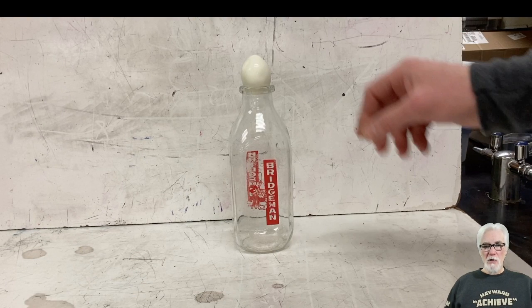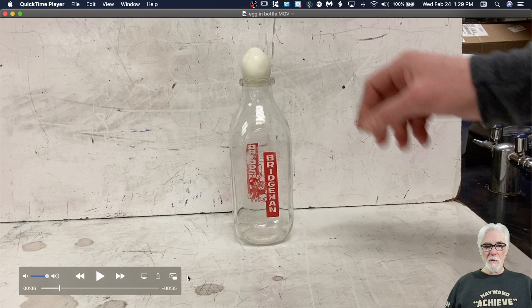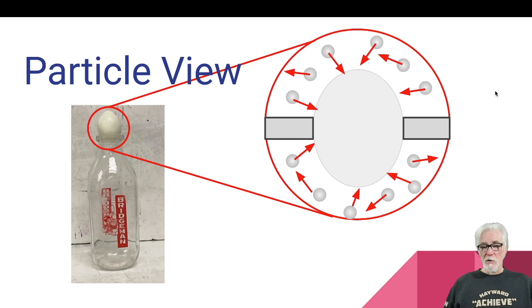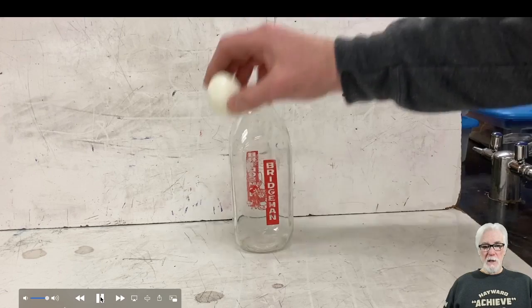Let's go back and review this and come up with an explanation based on what we know about pressure and particles. When I set that egg on top of the bottle for the first time, I trapped inside the same exact air that was on the outside. So the density of air particles colliding with the top of the egg is about exactly the same as the density on the bottom of the egg. The push up and the push down by the air particles is just about the same. There's also gravity pulling the egg down, but the opening is too hard a barrier for gravity to overcome with air pressure balanced.